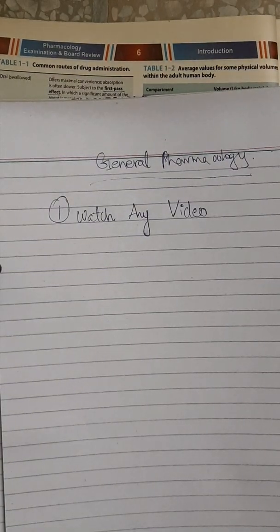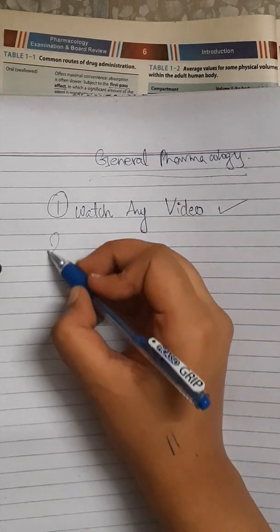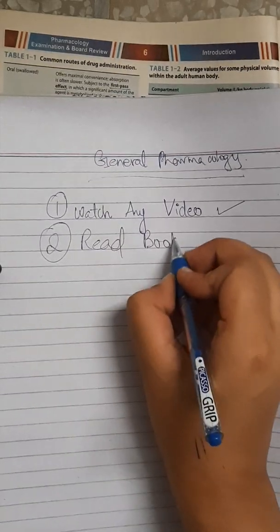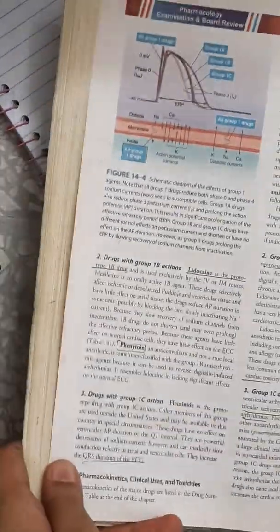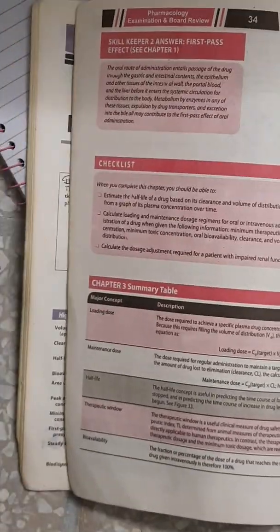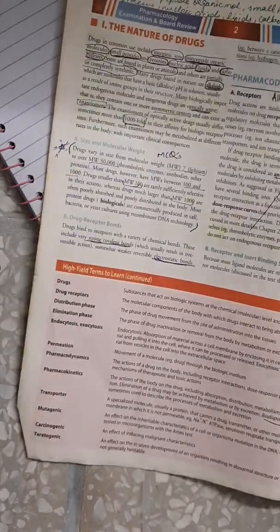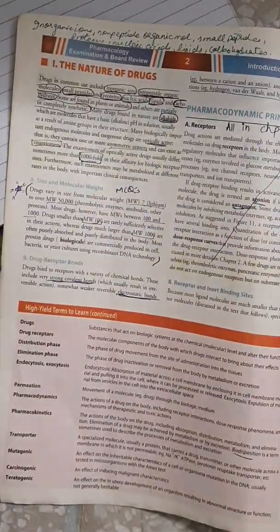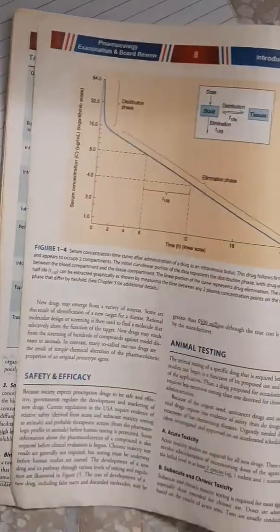So number one is to watch any video. Number two is to read your book. What I prefer to study is the Katzen book — specifically the mini Katzen. For instance, if we are focusing on the chapter about introduction, it covers the nature of drugs and pharmacology principles, and it's based on just about four to five or maximum six pages.